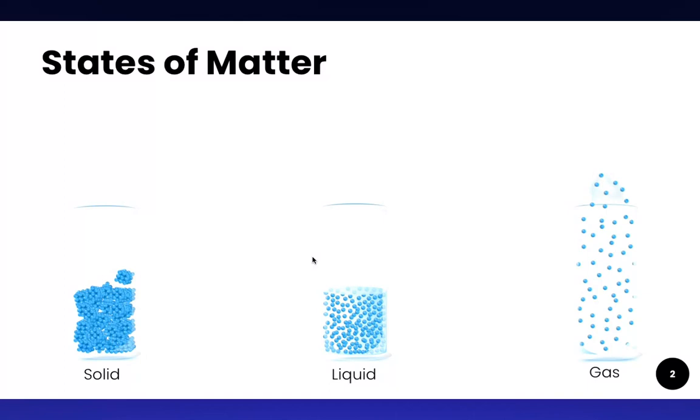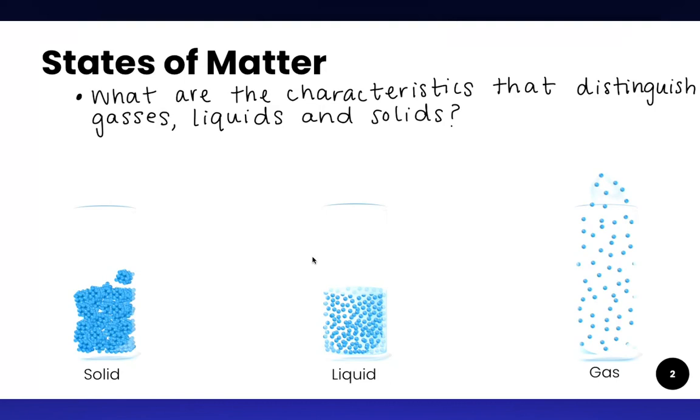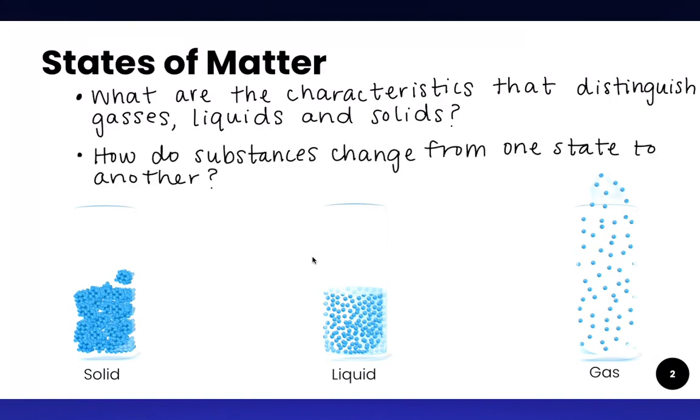And I'm sure that you have studied the states of matter in previous science classes so I'm going to start by asking you a couple of questions. My first question is what are the characteristics that distinguish gases, liquids, and solids? And my next question is how do substances change from one state to another?